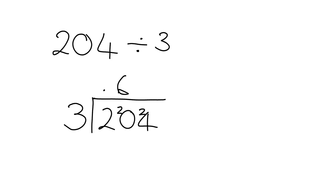And now we have to ask ourselves, how many 3's are there in 24? And the answer is 8, because we know that 3 times 8 is 24. So we get our answer here of 68.